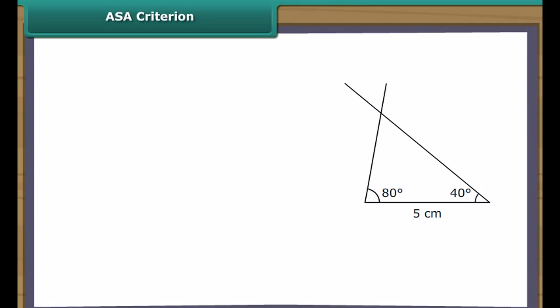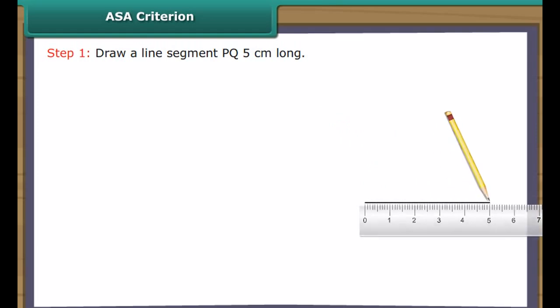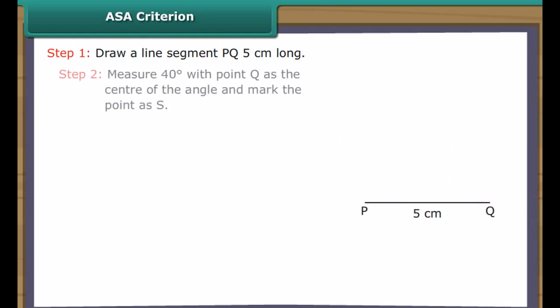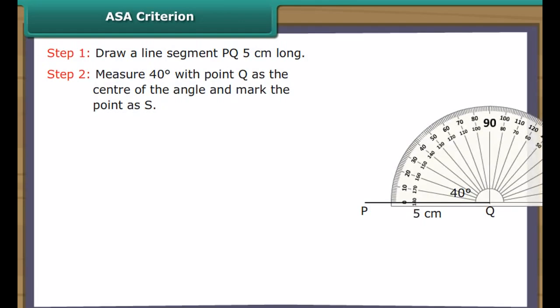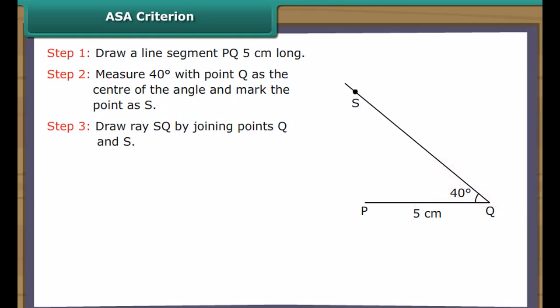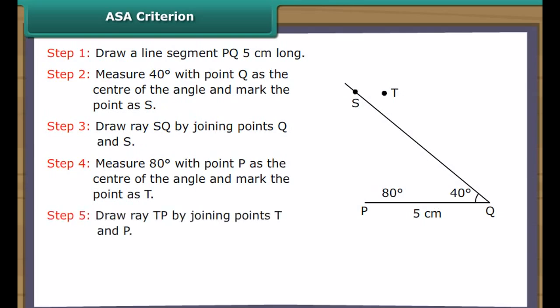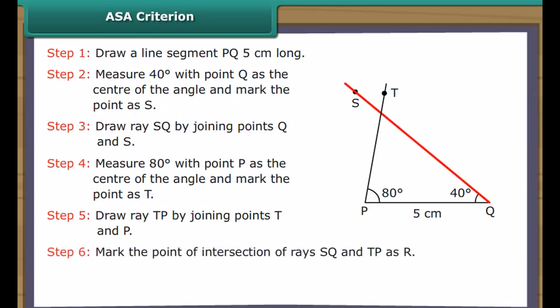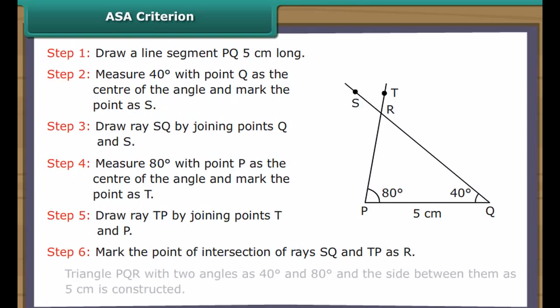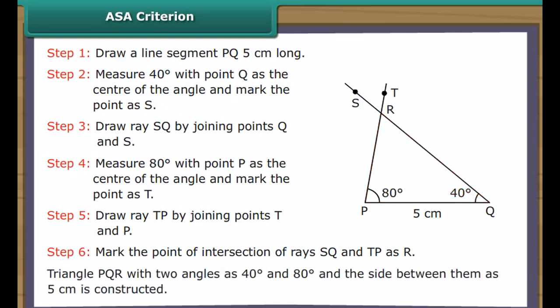ASA criterion. Let us now draw a triangle, two of whose angles measure 40 degrees and 80 degrees, and the side between them measures 5 cm. Draw a line segment PQ 5 cm long. Measure 40 degrees with point Q as the center of the angle and mark the point as S. Draw ray QS. Measure 80 degrees with point P as the center of the angle and mark the point as T. Draw ray TP. Mark the point of intersection of rays QS and TP as R. Triangle PQR with two angles of 40 degrees and 80 degrees, and the side between them of 5 cm is constructed.